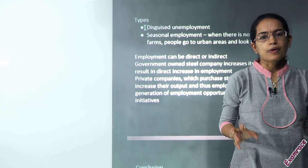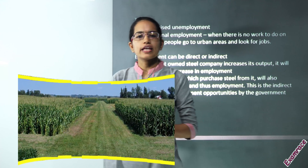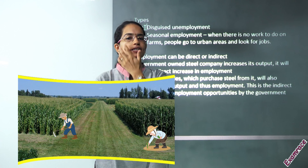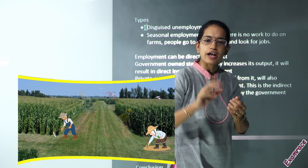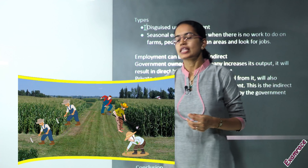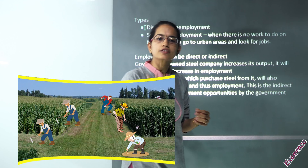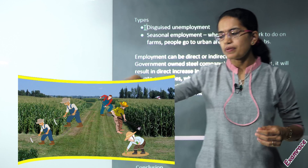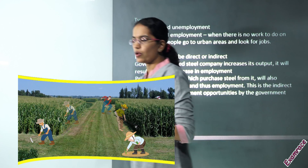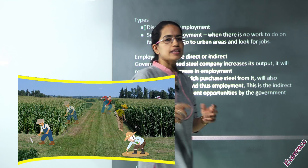Let's first talk about disguised unemployment — what it actually means. Let's say there is a farm. On that farm there are two people who are actually working, but that farm is sustaining five people. All five feel that in one way or the other they are contributing to that farm, but the actual requirement is only two persons. So three persons out of those five would be a kind of disguised unemployment — they are actually not required on the farm but they are part of it.